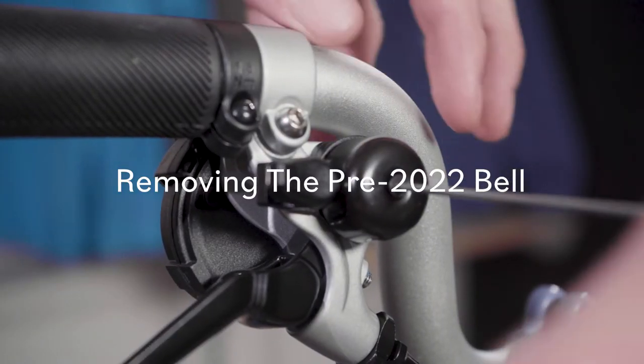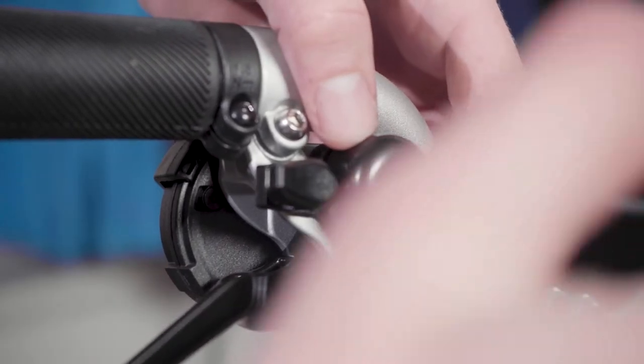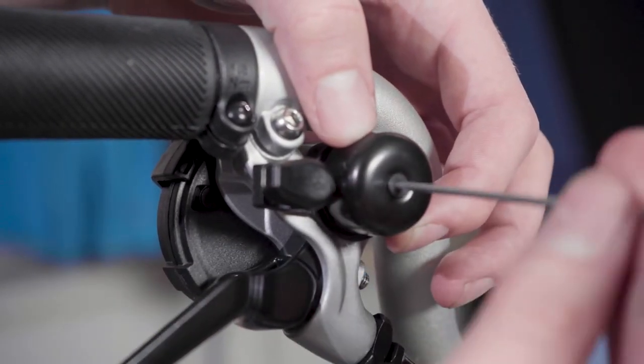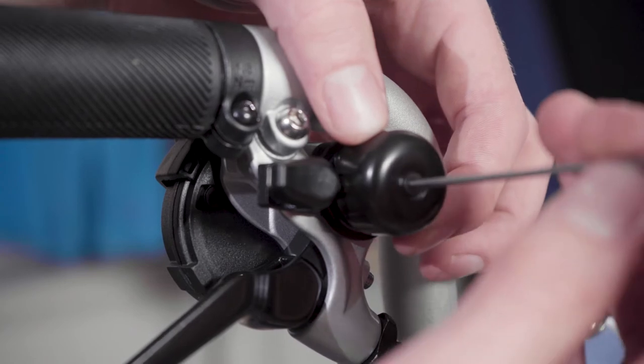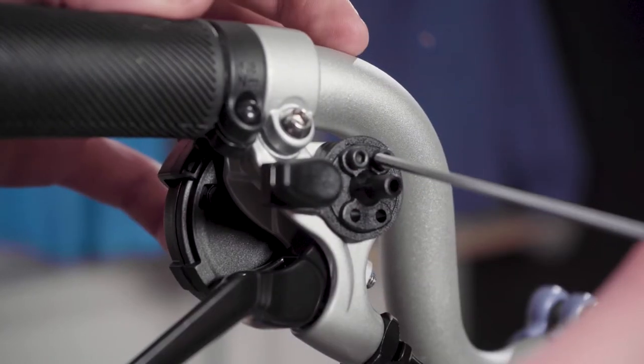Removing the pre-2022 bell. Unscrew the countersunk bolt in the center of the bell using the 2mm hex key and remove the bolt, bell cup and washer.